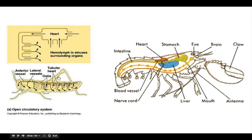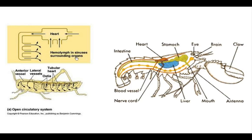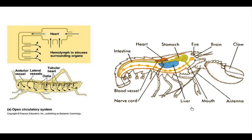Here we can see a cricket and a simplified image of an open circulatory system. The heart pumps hemolymph into a series of vessels; however, those vessels open straight into the body cavity of the insect, and the hemolymph eventually makes its way back to the heart to continue the cycle. Unlike a closed circulatory system, there's no separation of oxygenated and deoxygenated blood, so cells aren't effectively provided with the oxygen needed for respiration — but because these organisms are quite small, they've adapted to deal with this.